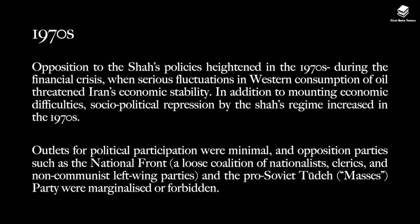This affected Iran significantly in the 1970s. Opposition to the Shah's policies heightened during this period, as there were lots of financial crises when serious fluctuations in Western consumption of oil threatened Iran's economic stability. In addition to mounting economic difficulties, socio-political repression by the Shah's regime increased throughout the 1970s. Outlets for political participation were minimal, and opposition parties such as the National Front — a loose coalition of nationalists, clerics and non-communist left-wing parties — and the pro-Soviet Tudeh, also known as the Masses Party, were marginalised or forbidden.